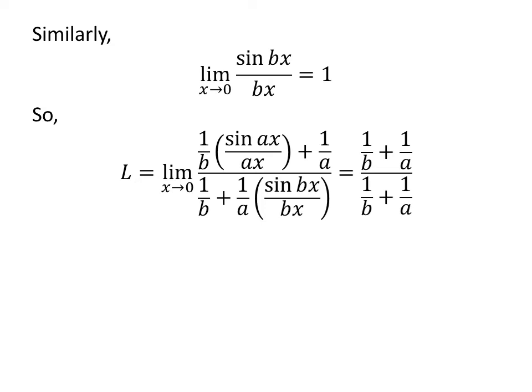These two statements give us the limit L equal to (1/b + 1/a) upon (1/b + 1/a) as x approaches 0. Cancelling out the common factor 1/b + 1/a in the numerator and the denominator gives us the limit L equal to 1.